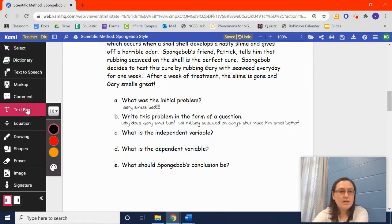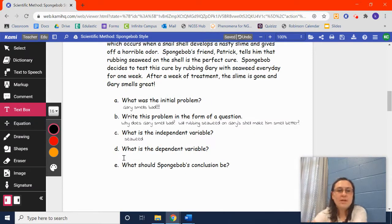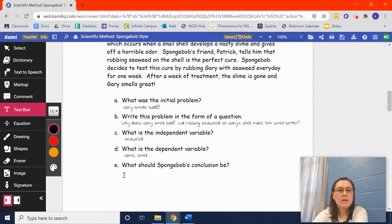C, what is the independent variable, the thing that I control? Well, what's SpongeBob going to do? He says he's going to test the cure by rubbing Gary with seaweed every day for one week. So, the independent variable would be seaweed. The dependent variable is the results. So, after a week, what were the results supposed to be or what's he looking for? He wanted to know if the slime was gone, if Gary smelled any better. So, slime, I don't want to say smell, either one of those.